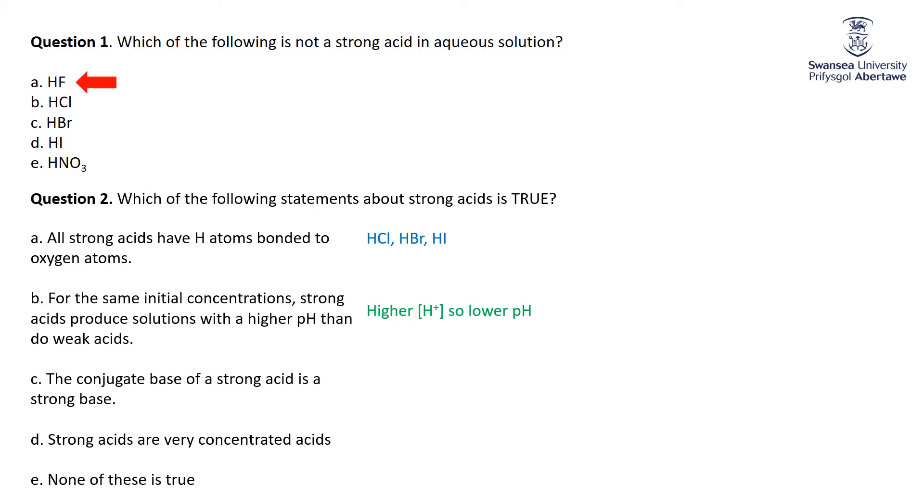Conjugate base of a strong acid is a strong base? Absolutely not. Acid and base strengths with the conjugates are inversely related, so the stronger an acid, the weaker the base. So a strong acid has a very, very, very weak conjugate base.